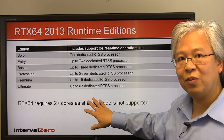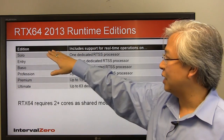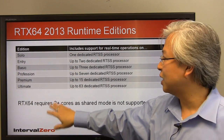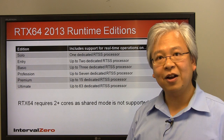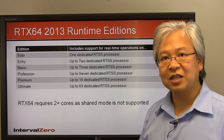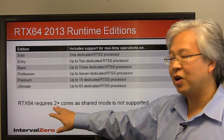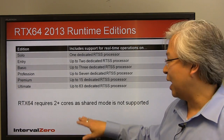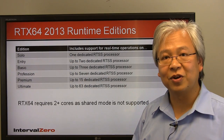In following with the different editions from our 32-bit version, RTX 64 has the same editions for its runtimes. We have everything from a solo edition — one real-time processor — going up to two, all the way up to 63 real-time processors. You can truly tailor the version of the RTX 64 runtime you need. RTX 64 requires two or more cores, as this product does not support the shared mode seen in our 32-bit version.